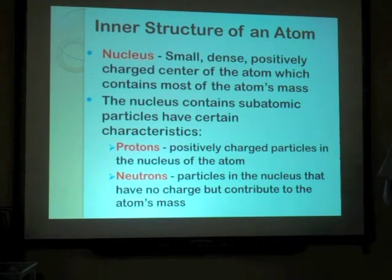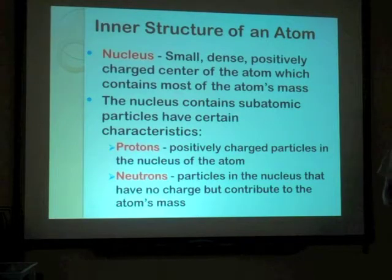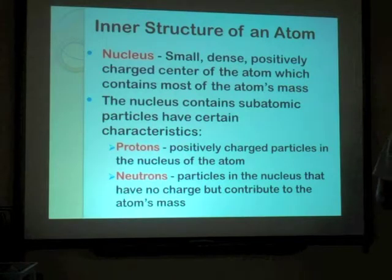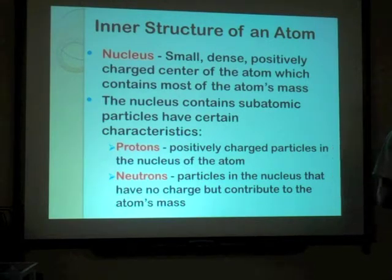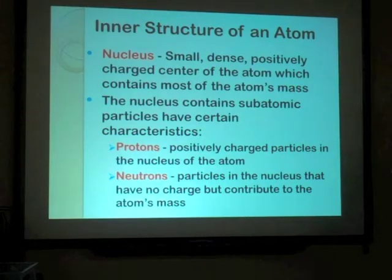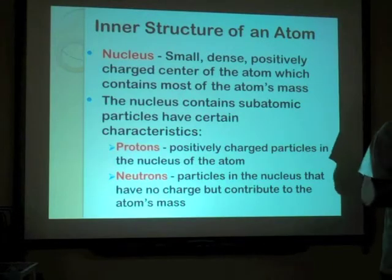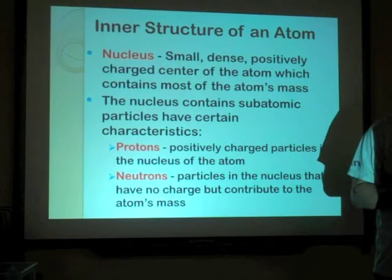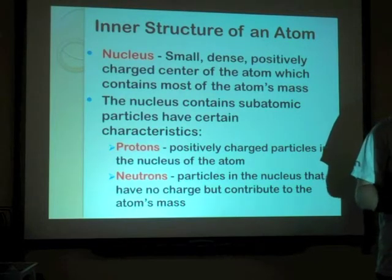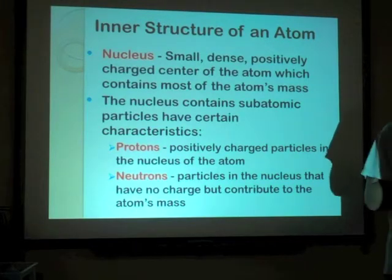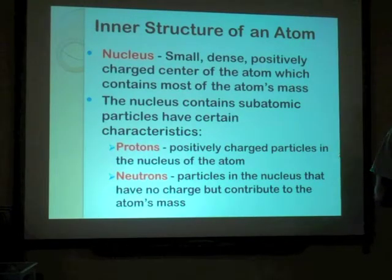The subatomic particles include protons — positively charged particles in the nucleus of the atom. Then there are neutrons — particles in the nucleus that have no charge but contribute to the atom's mass. The only real difference between protons and neutrons is that protons have a positive charge and neutrons are neutral, no charge. Neutron just means neutral. Proton starts with a P — it's positive. That's the way to remember it. So protons and neutrons make up the mass of the atom; they're both in the nucleus and they have the same size.